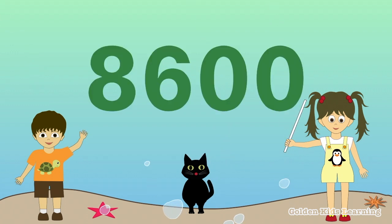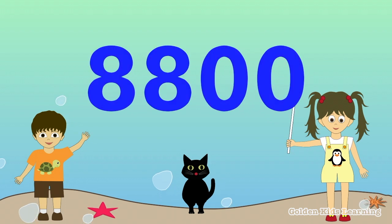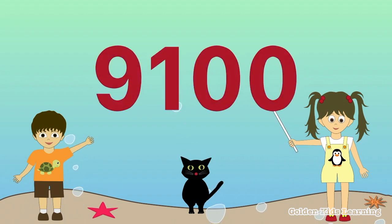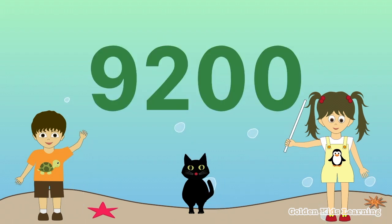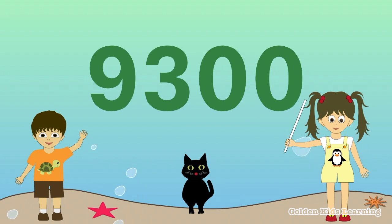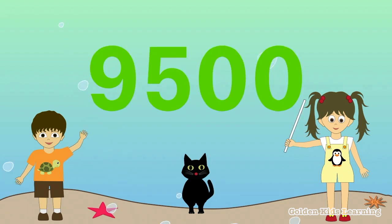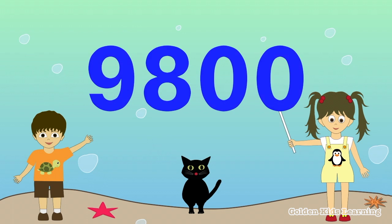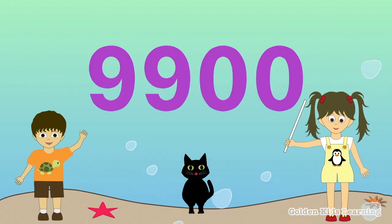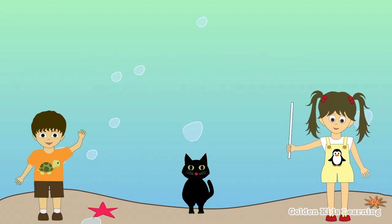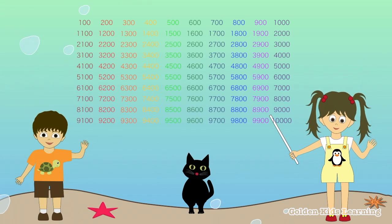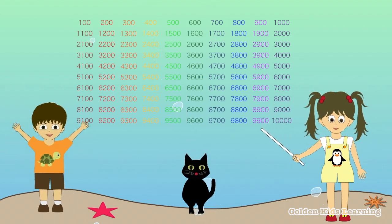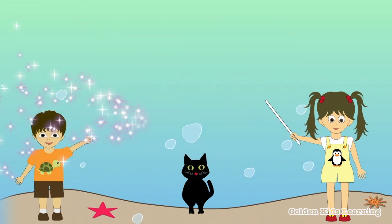8,600, 8,700, 8,800, 8,900, 9,000, 9,100, 9,200, 9,300, 9,400, 9,500, 9,600, 9,700, 9,800, 9,900, 10,000.